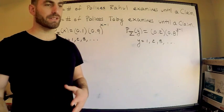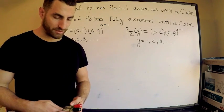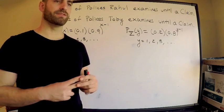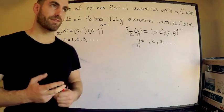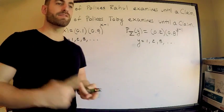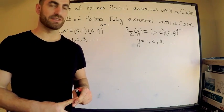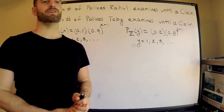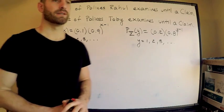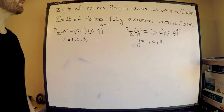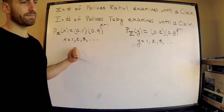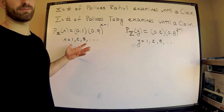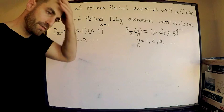Now something you need to know right off the bat is that these random variables both are distributed geometrically. You should absolutely know that there are two types of geometric random variables for exam P specifically. One of them is the number of failures until the first success, the other one is number of trials until the first success.